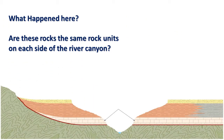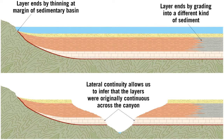What happened here? Are these rocks the same rock units on each side of the river canyon? That's right — the rocks originally extended across the entire region. It is only because the river eroded them that they are now separated by the river canyon. This is an example of lateral continuity.